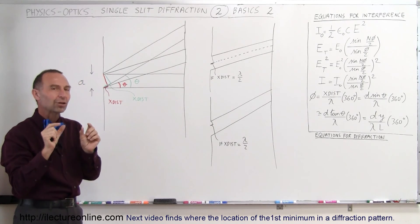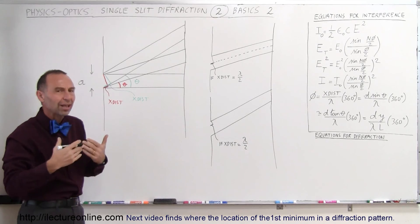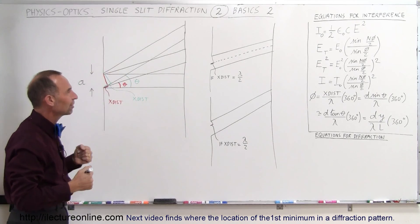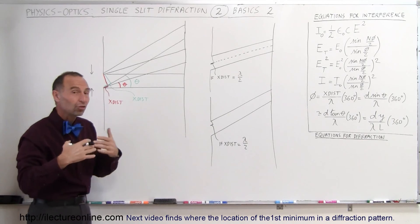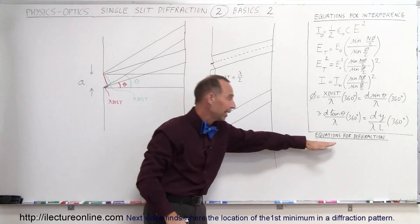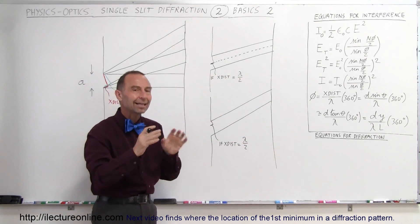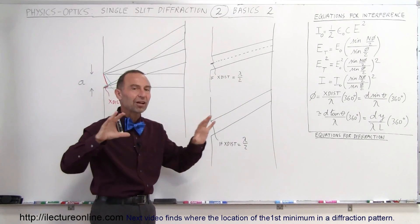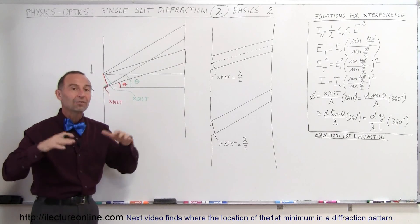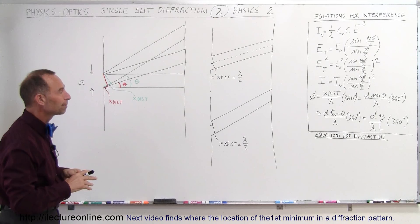In between those maxima, you have areas where there's a minimum. So what causes that? What is the reason why we have that interesting pattern? There are also some associated equations we're going to develop so we can easily calculate what that diffraction pattern looks like and what the intensity of the pattern looks like at different places along the screen on the other side.